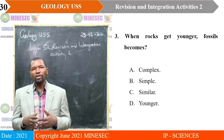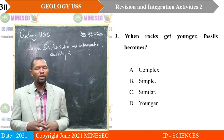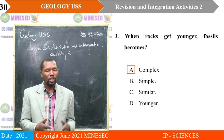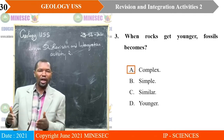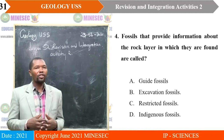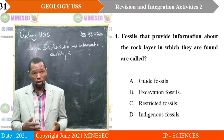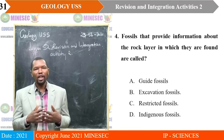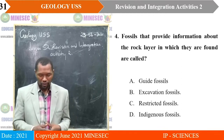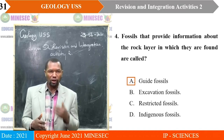Question three: when rocks get younger, fossils become — A. Complex, B. Simple, C. Similar, D. Younger. Correct answer is A. In fossil evolution, as rocks become younger, the fossils become more complex. Question four: fossils that provide information about the rock layer in which they are found are called — A. Guide fossils, B. Excavation fossils, C. Restricted fossils, D. Indigenous fossils. Correct answer is A, guide fossils, also called index fossils or diagnostic fossils.